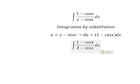So this one we change by u. One minus cosine x dx we change by du.